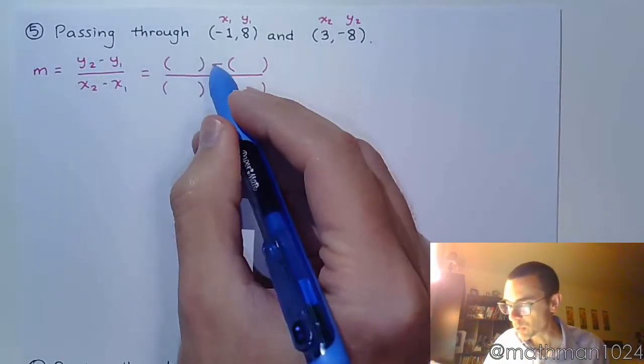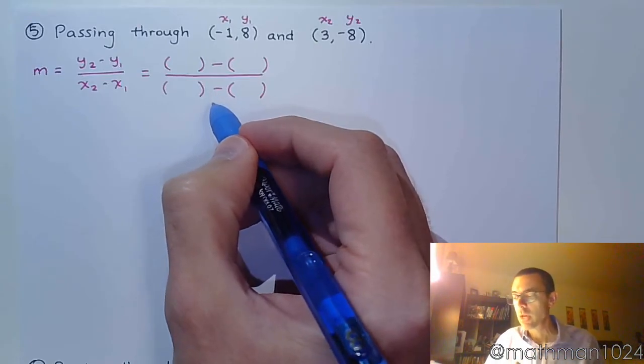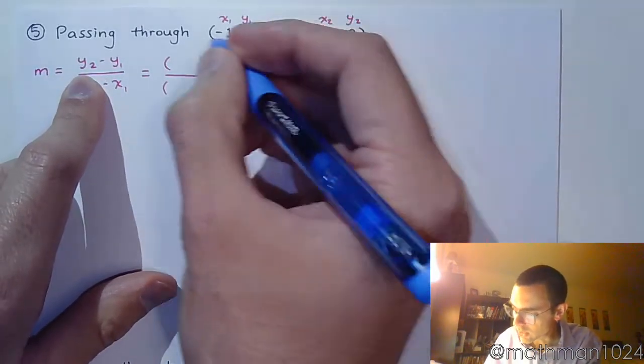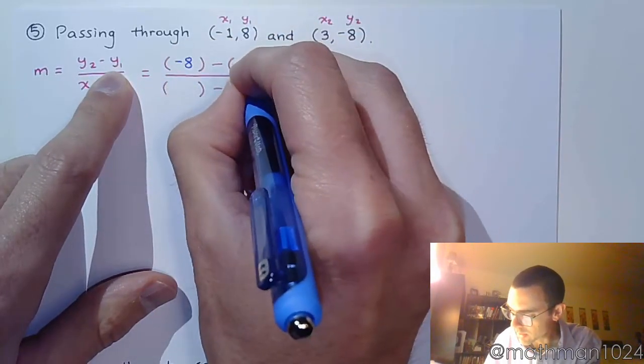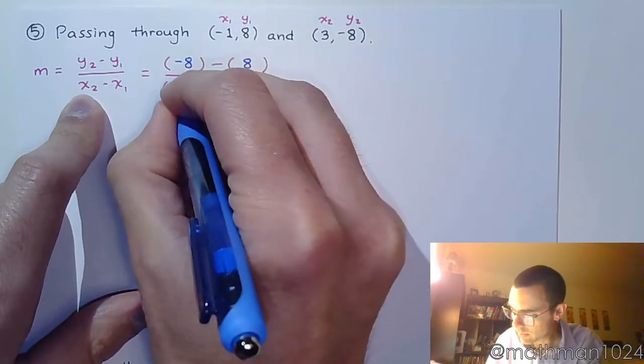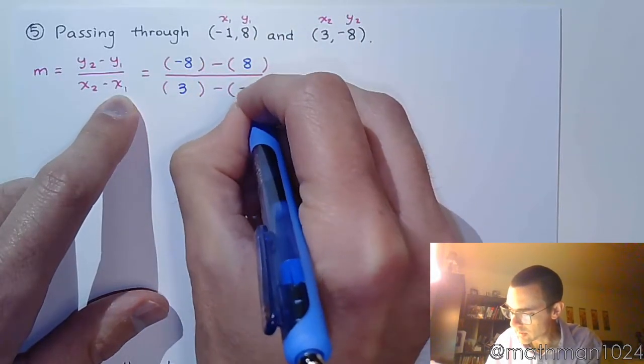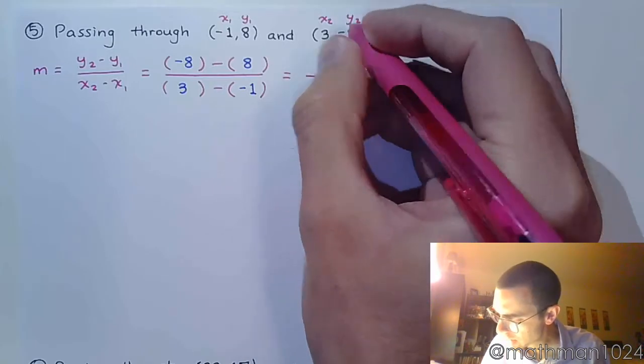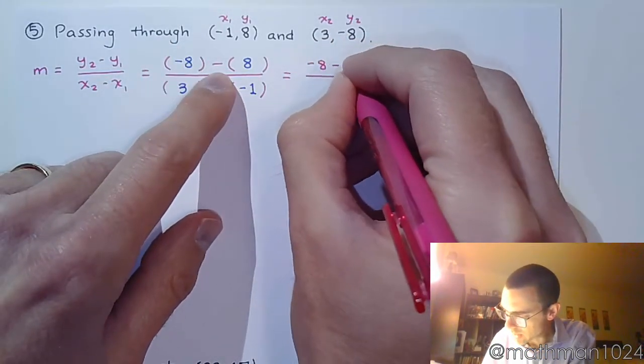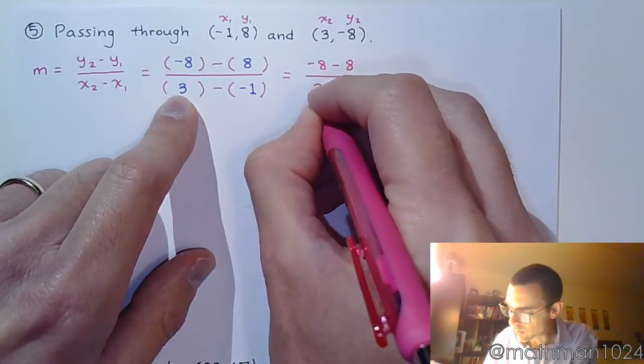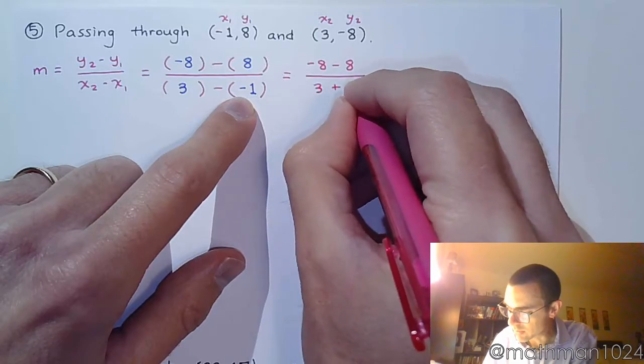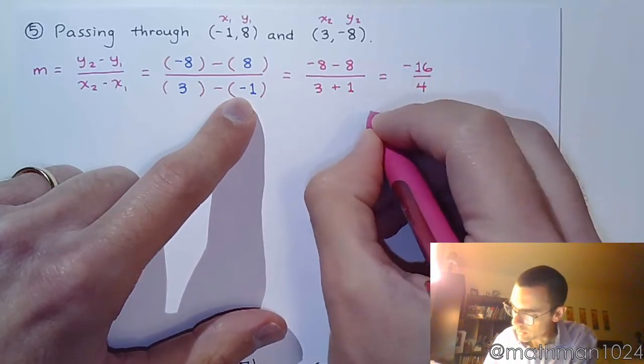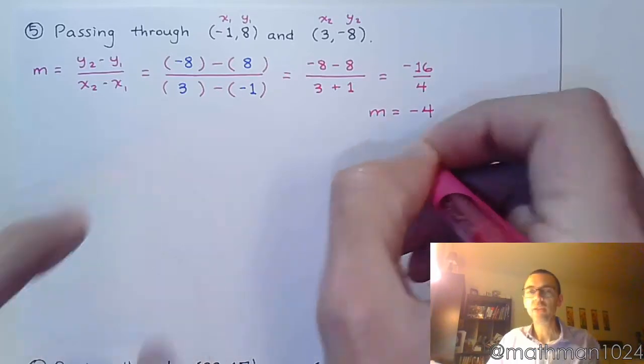Because I need you to understand, there's subtraction that's already inherent as part of this formula, and not to be confused with the negative or any negative signs you may see with your coordinates. So y2 is this guy, so I'm going to write negative 8. Negative 8, y1 is positive 8, x2 is 3, and x1 is negative 1. And so now we just work this out. Let's clean up these parentheses. So we have negative 8 minus 8 over, this is 3, minus times negative, is going to make that a positive 1. So we end up with negative 16 over positive 4, which means that my slope is negative 4.